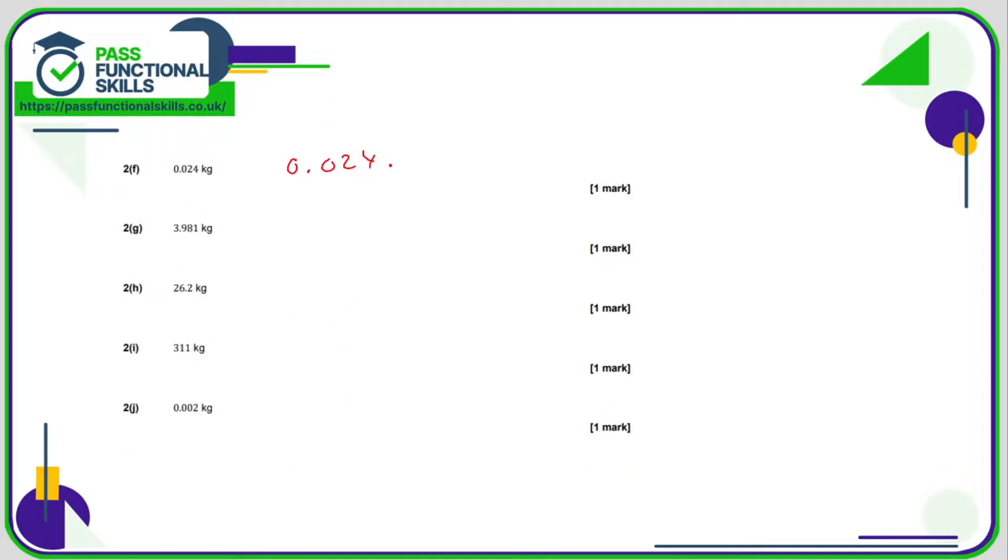0.024. Again stick some zeros on the end to move the decimal point really easily. That's 24 grams. 3.981. Move the decimal point three positions. 3,981.